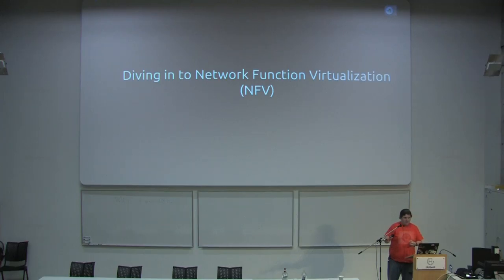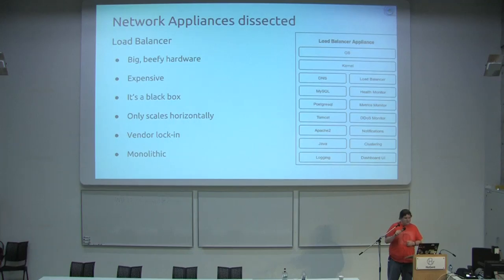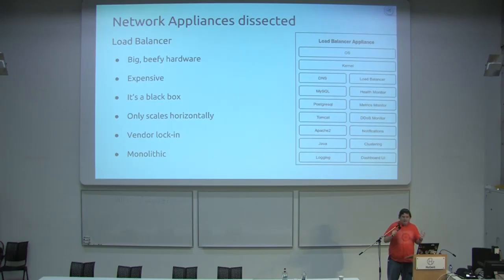I want to dive in a little bit now to the NFV functions. This is a look at an enterprise-level load balancer — it's made up of a whole bunch of different components, a lot of them developed by different teams making different technological decisions. What you end up with is a single stack run on a single high-powered device that's very expensive, and it's a power drain running MySQL and Postgres, and it might have a third database because it's just a mashup of all these different components.